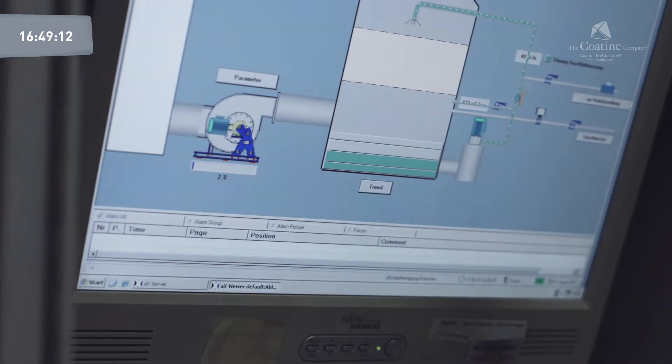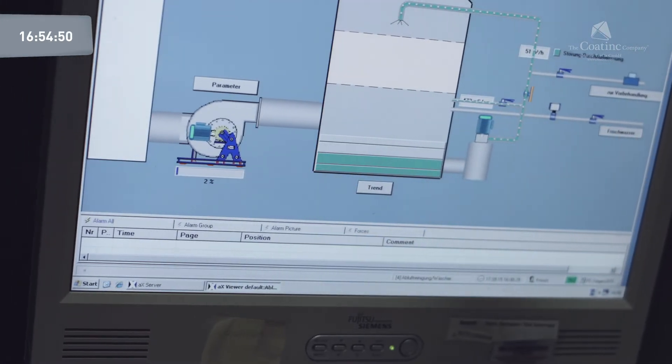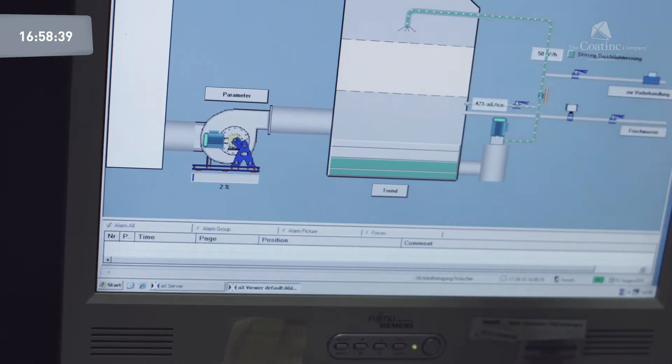After the flux bath, the material is dried in a drying oven. This means that the surfaces are more than just surface cleaned.